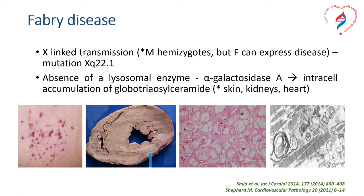The mutation on the X chromosome leads to the absence of a lysosomal enzyme called alpha-galactosidase A. Due to the intracellular accumulation of globotriaosylceramide, there are changes in several organs. We can easily see the changes of the skin, and you can see here angiokeratomas. The heart suffers with left ventricular or biventricular hypertrophy together with patches of fibrosis. In any organ, histology can show the presence of globotriaosylceramide and lipid inclusions.